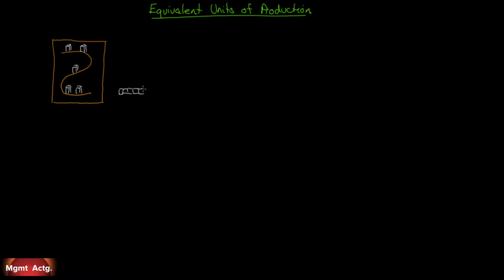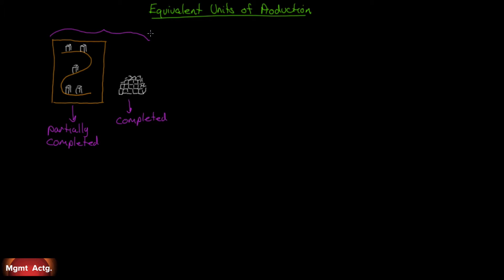These finished products — the completed units — are easy to count. But look over here at the partially completed units on the line. The production report tracks total cost for the period, and that total cost covers everything: all units, including the partially completed ones.